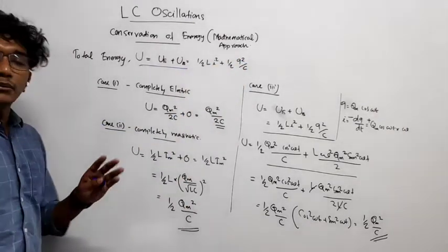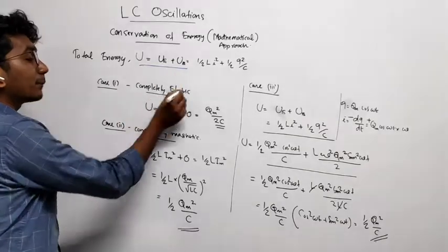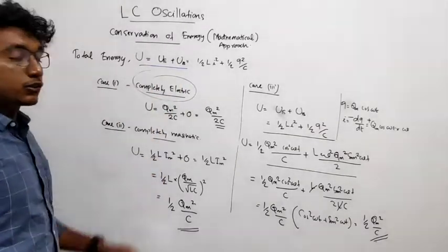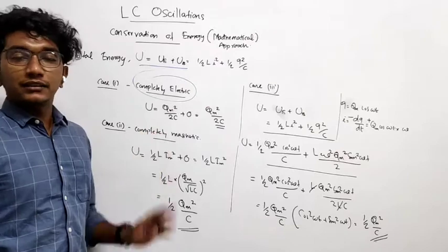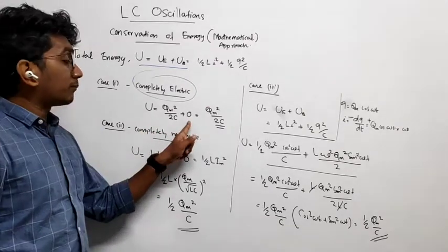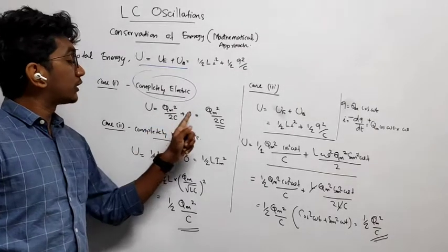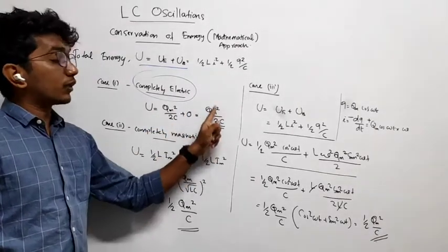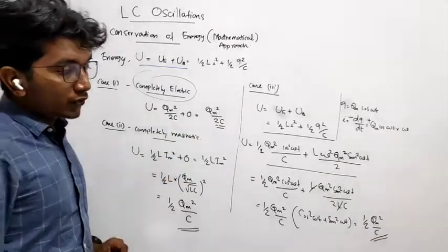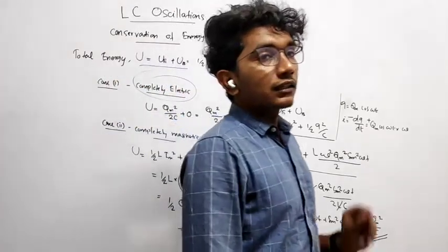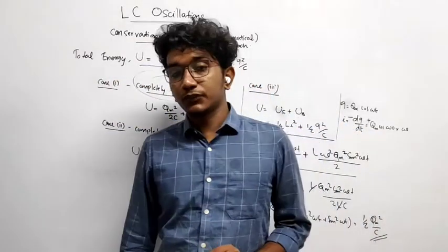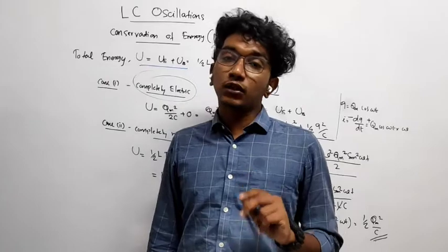We will consider case one. Completely electric energy. And you know that Qm squared divided by 2C, that is the energy. And what is the magnetic energy? Ub equal to zero here. So only U is equal to Ue, that is Qm squared divided by 2C. We have to prove that in all two cases the values are same. That is what is our aim.